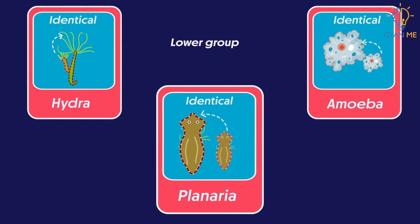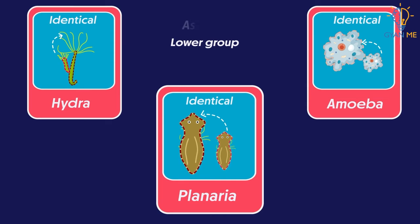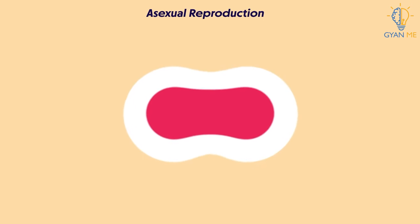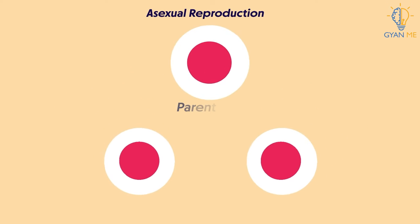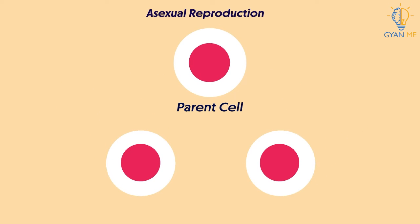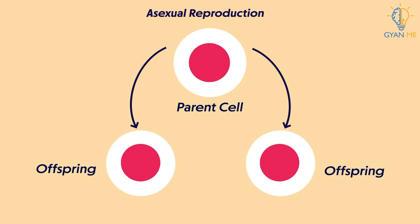This is because they reproduce asexually. In asexual reproduction, only one parent is required to produce offspring. And thus, the offspring are like clones to the parents and to each other also.